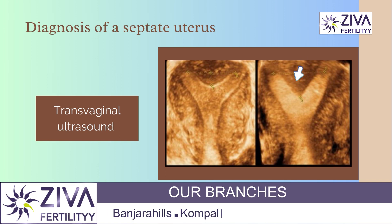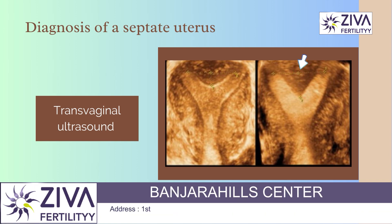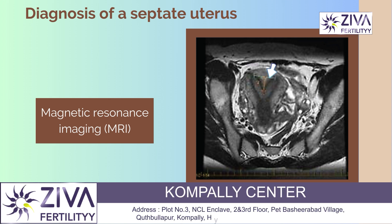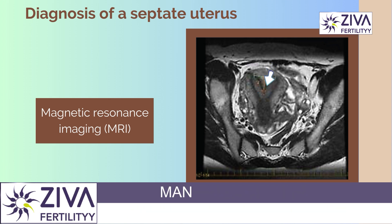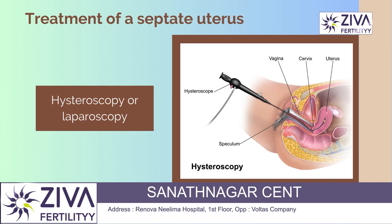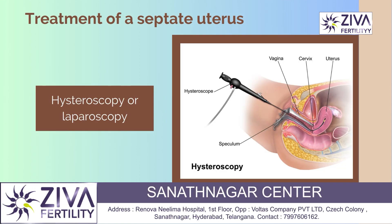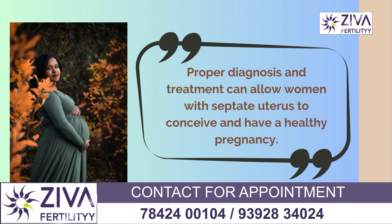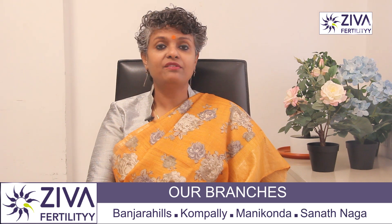Diagnosis of septate uterus is typically done by performing a transvaginal ultrasound or a magnetic resonance imaging, also called an MRI scan. Treatment usually involves surgical removal of the septum through hysteroscopy or laparoscopy, and the surgical procedure usually tries to remove the septum and create a single uterine cavity that can support a healthy pregnancy.